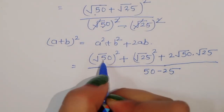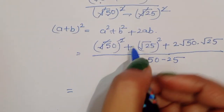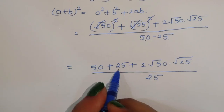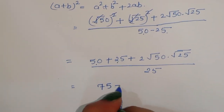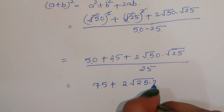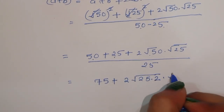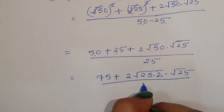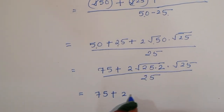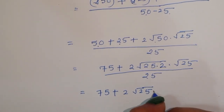Now 50 - 25 = 25 in the denominator. In the numerator: 50 + 25 = 75, and 2×√50×√25. We can write √50 as √(25×2), so 2×√(25×2)×√25 = 2×√25×√2×√25 = 2×25×√2. So the numerator is 75 + 50√2, divided by 25.